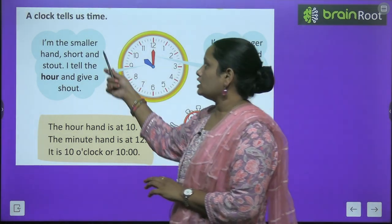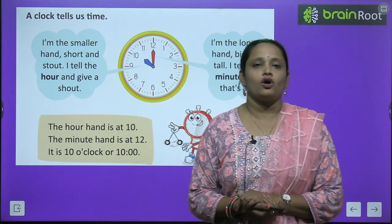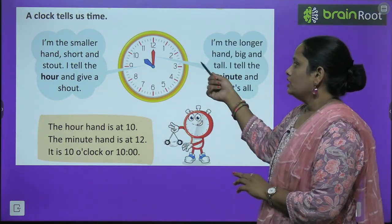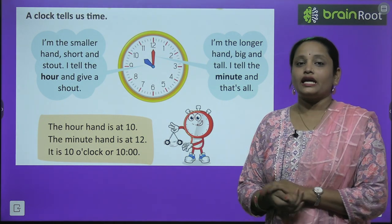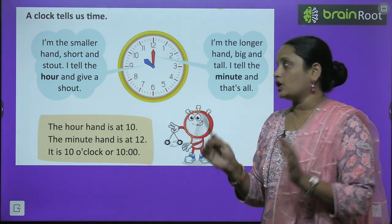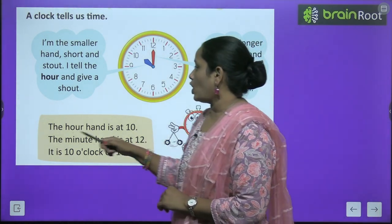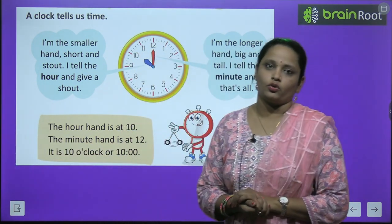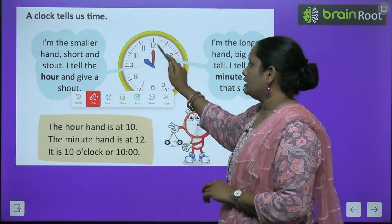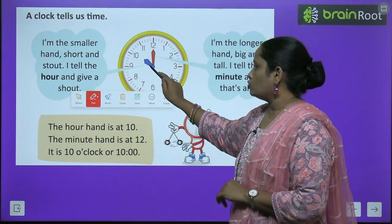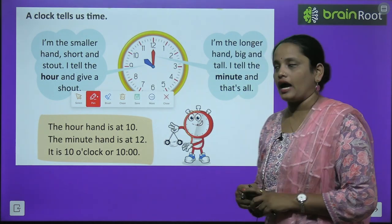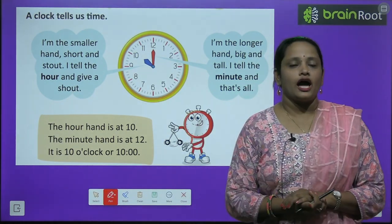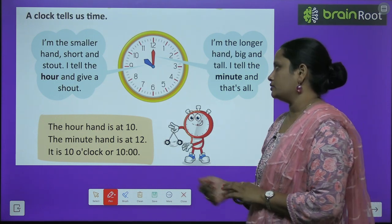So, clock tells us time — clock हमें time बताता है। यहाँ पर आपके सामने एक बड़ा clock है। इस clock में आप देख सकते हैं, two hands दिखाई दे रहे हैं। एक है big hand और जो दूसरा है वो है small hand। Big hand is of red color and small hand is of blue color.